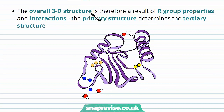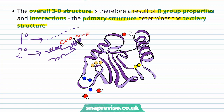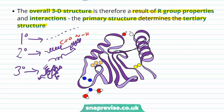So, bearing all of these bonds and structures in mind, the overall 3D structure is a result of R group properties and interactions. The primary structure determines the tertiary structure. Up until this point we've had a primary structure which was a sequence of amino acids. In the secondary structure, certain regions wound up into either beta pleated sheets or alpha helices, held together by hydrogen bonds of the CO or NH bonds found on all amino acids. The tertiary structure is the specific interaction and folding of all of these 3D shapes into a unique shape, driven by bonds of the R groups — ionic, hydrogen, disulfide links, and the hydrophobic and hydrophilic amino acids.